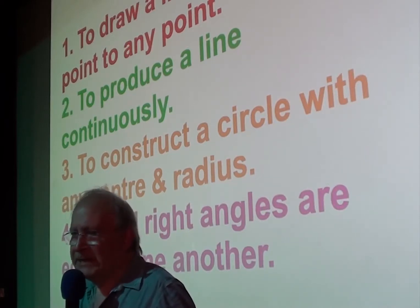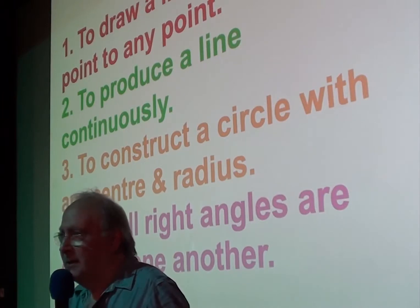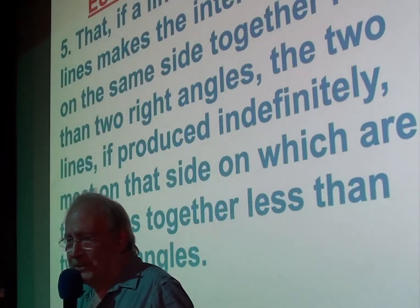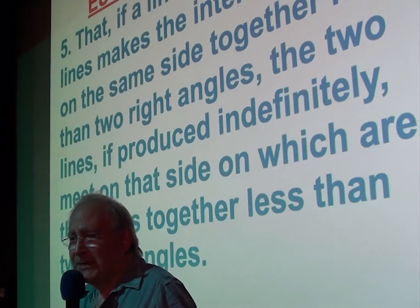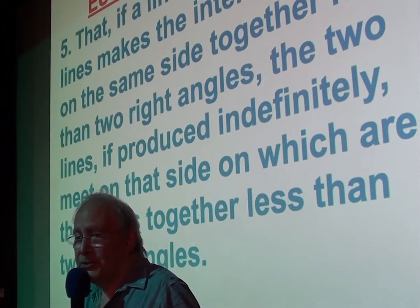Right, so I said there were five axioms. I've only shown you the four. Now I'm going to show you the fifth axiom, the one that caused all the trouble. Now don't run out screaming when you see this. Euclid's fifth axiom: that if a line falling on two lines makes the interior angles on the same side together less than two right angles, the two lines, if produced indefinitely, meets on that side on which are the angles together less than two right angles.